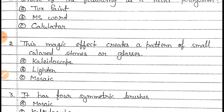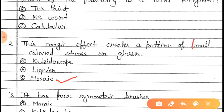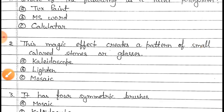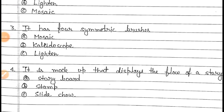Mosaic is the right answer. You have to tick on option C — Mosaic. This magic effect creates a pattern of small colored stones or glasses, so this is the Mosaic effect. As you all know, the Mosaic effect gives an effect that numerous small colored pieces of stone or glass have been used to create a drawing.